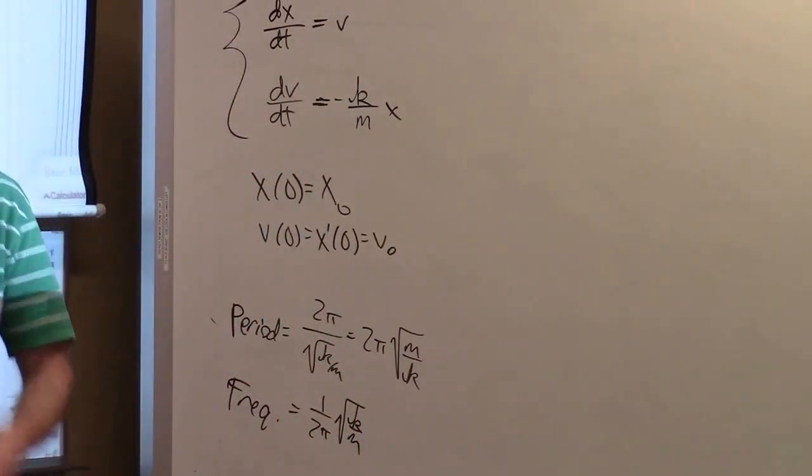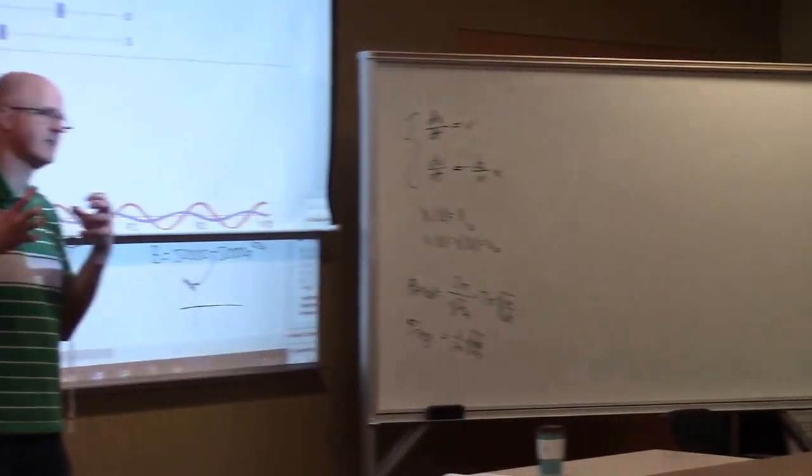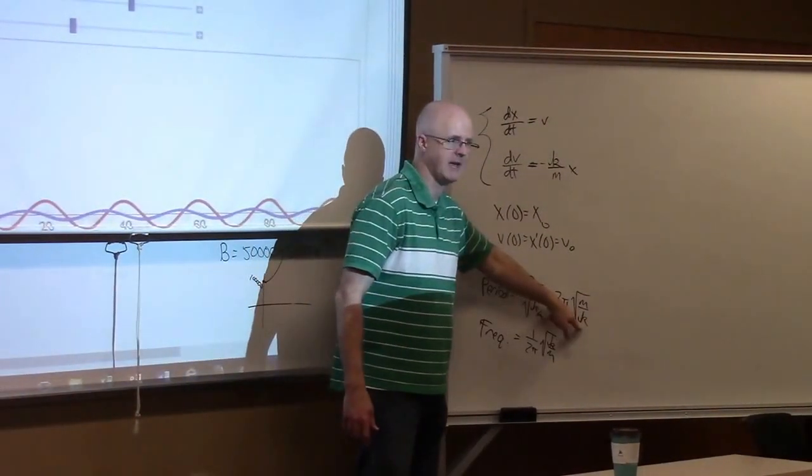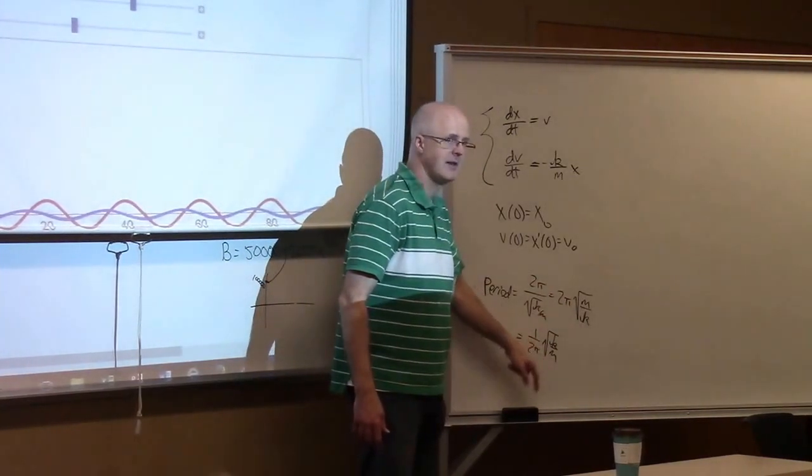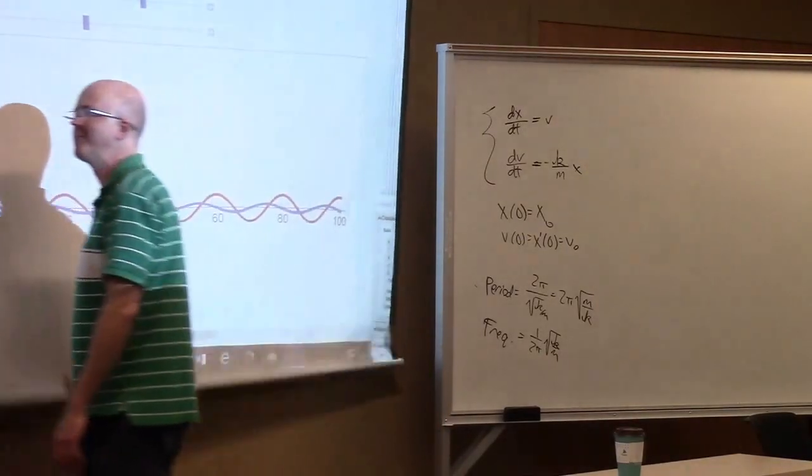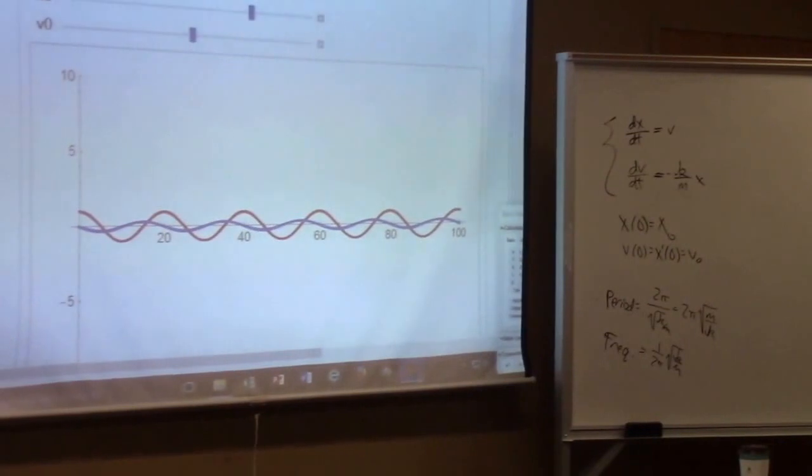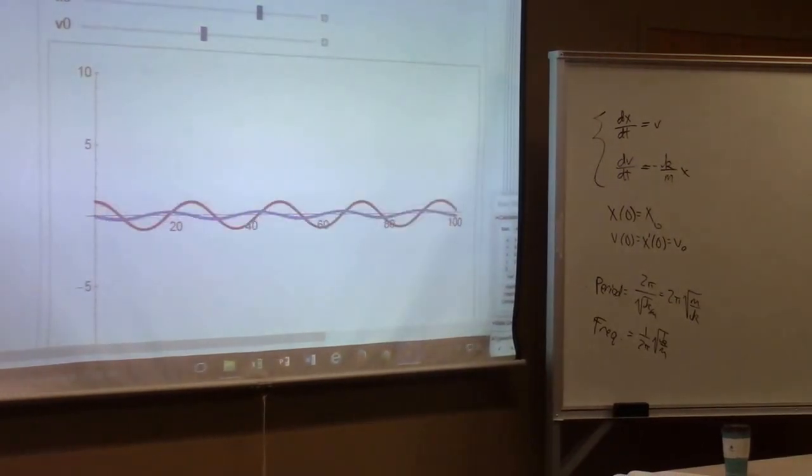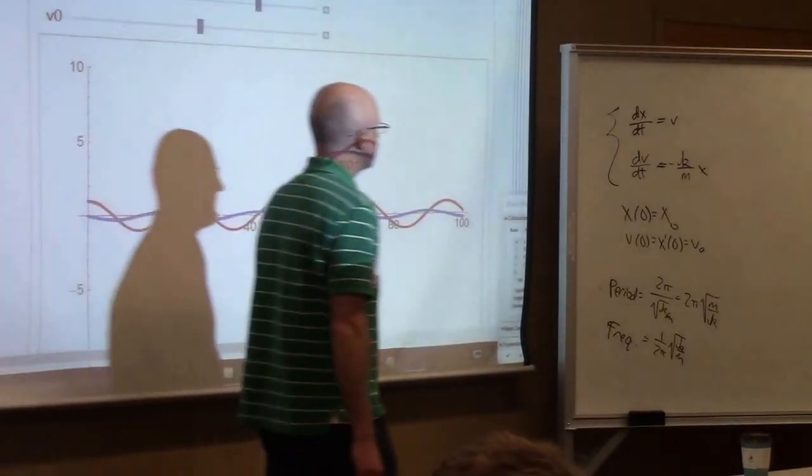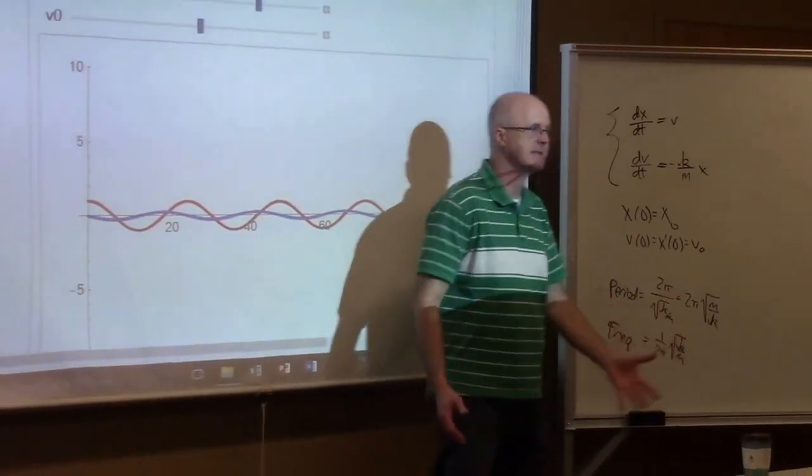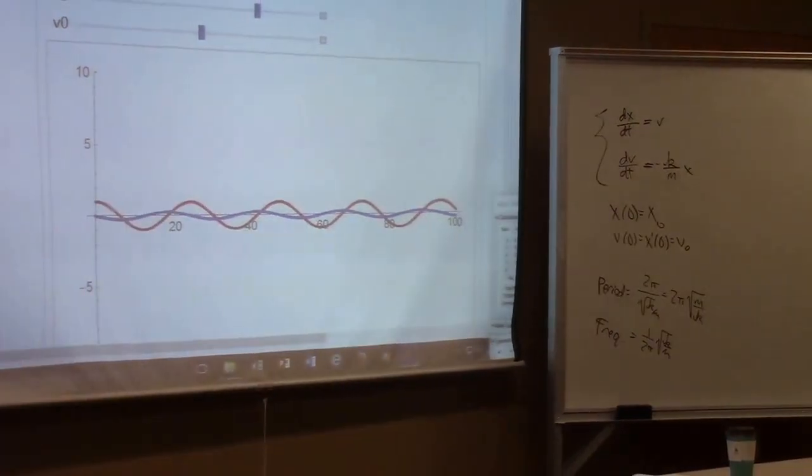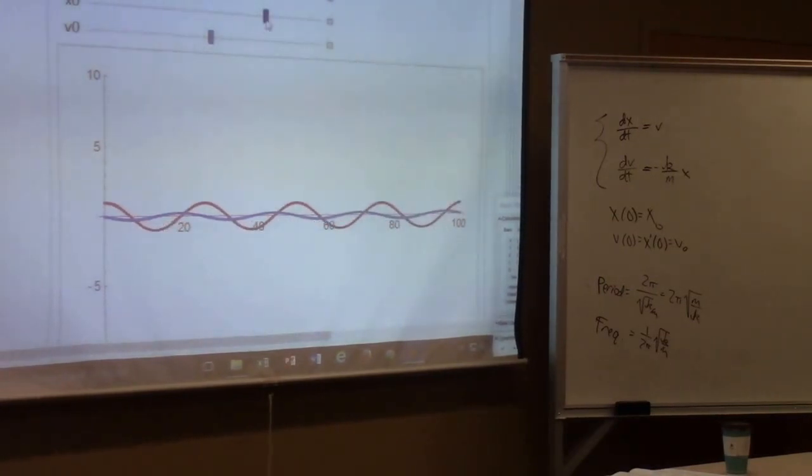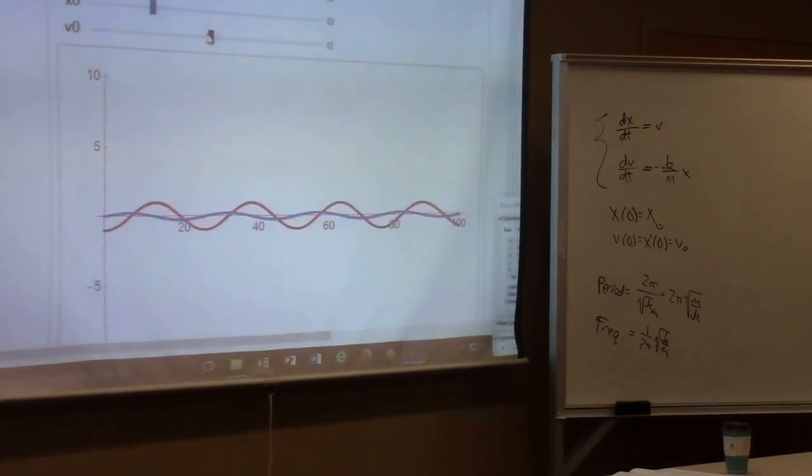If I increase K, for example, make the spring stiffer, what's going to happen? The period is going to go down if I increase K. The frequency goes up. That's a faster oscillation. I should see the period decrease, I should see faster oscillation. On the other hand, M plays the opposite role. Increasing M increases the period and decreases the frequency. If I increase M, it's a slower oscillation. And then changing the initial position and initial velocity does just that. Changes the initial position and initial velocity.